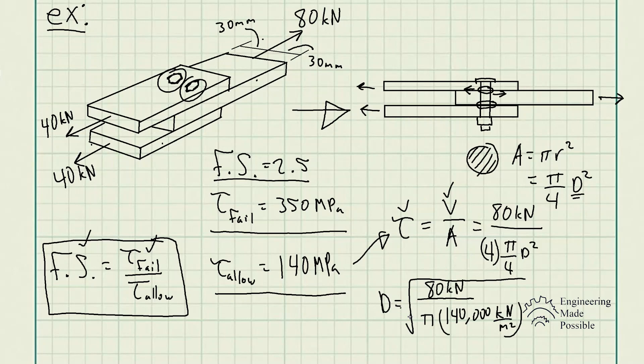Bringing the diameter to the other side, square rooting both sides, you get 80 kilonewtons divided by pi, because the four cancels out here, and we have 140 megapascals. Keep in mind the units: we have kilo, mega, giga, tera, and so forth.